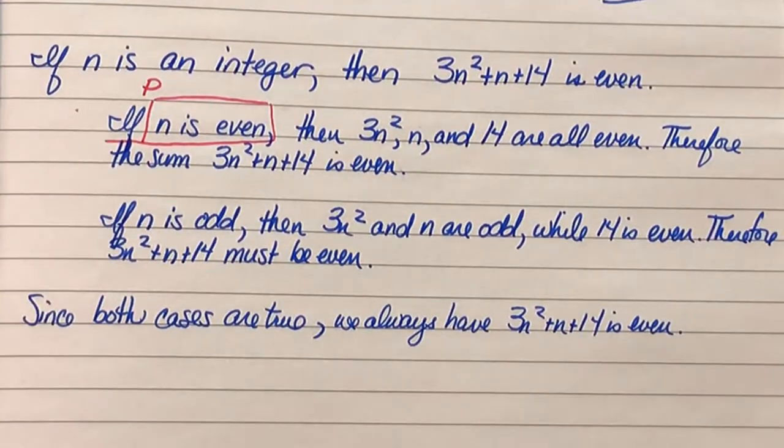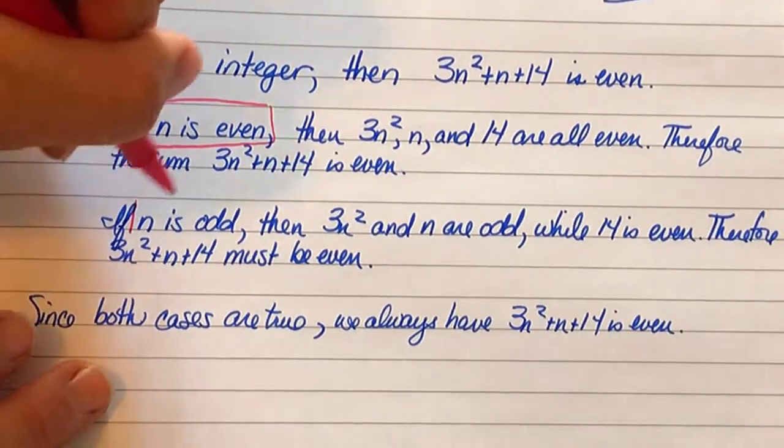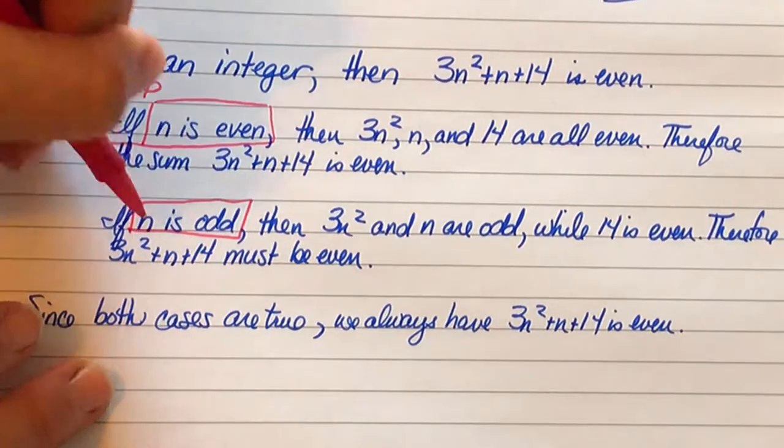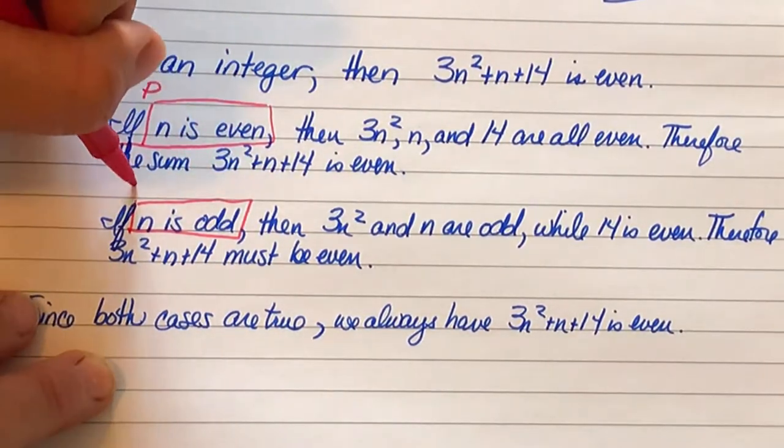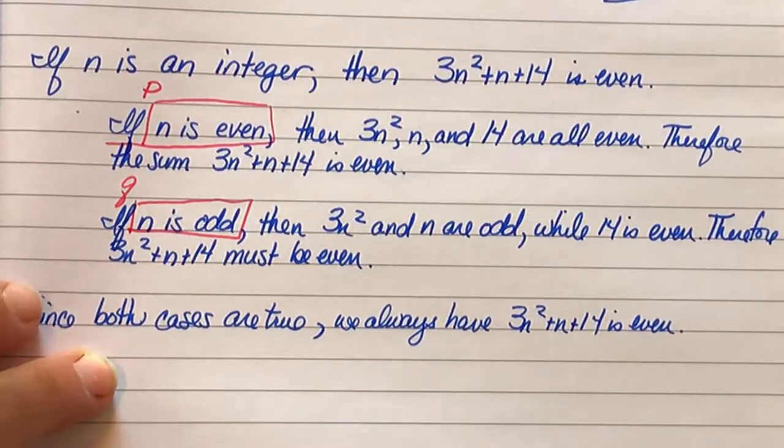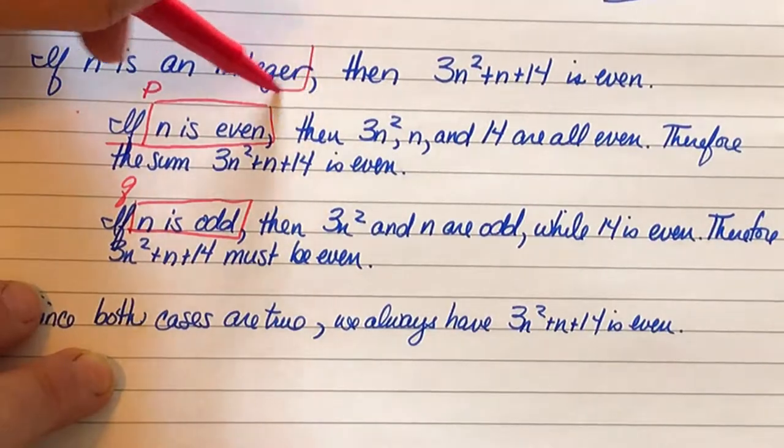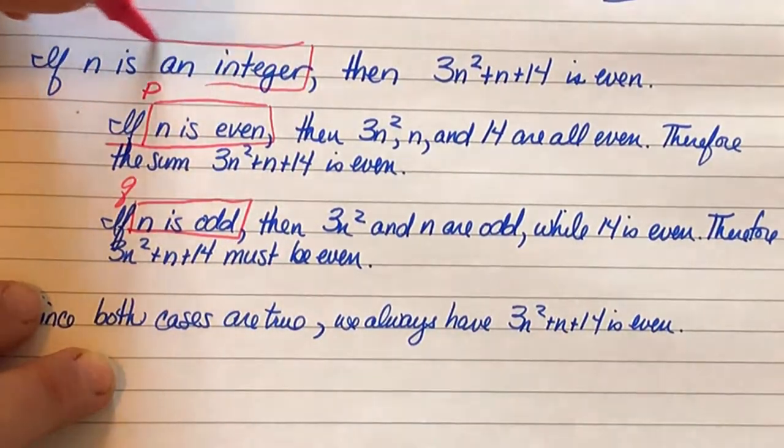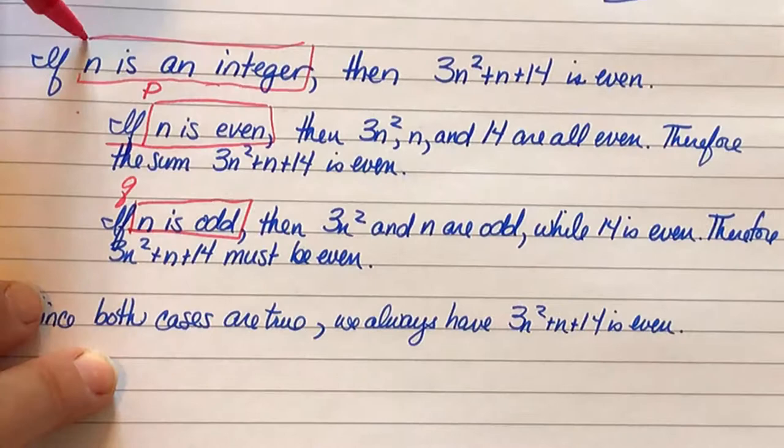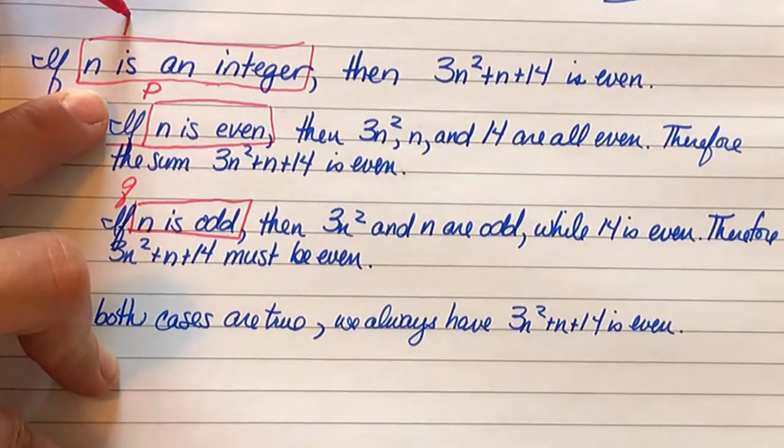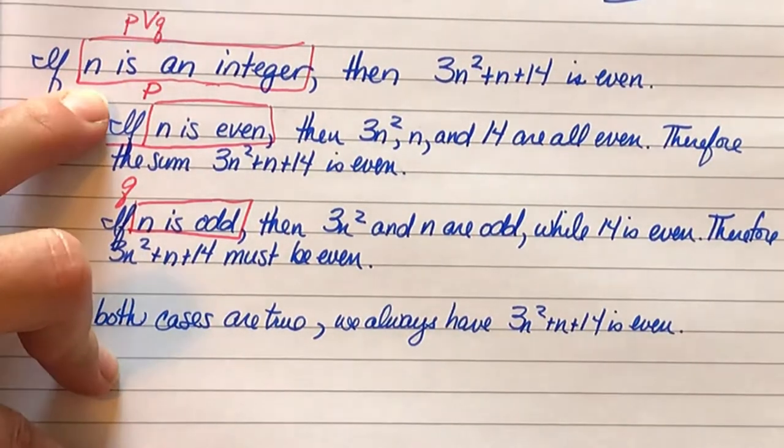n is an even integer. n is an odd integer, this piece right here, n is an odd integer, will be q. And therefore, since all integers are either even or odd, this right up here has to be p or q.